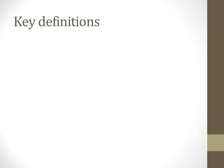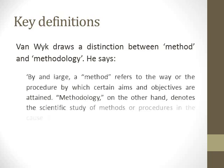Some key definitions: Van Veik draws a distinction between method and methodology. A method refers to the way or procedure by which certain aims and objectives are attained. Methodology, on the other hand, denotes the scientific study of methods or procedures in the course of research — the overarching theory of methods, whereas a method is a particular researcher's procedure for accomplishing his objectives.